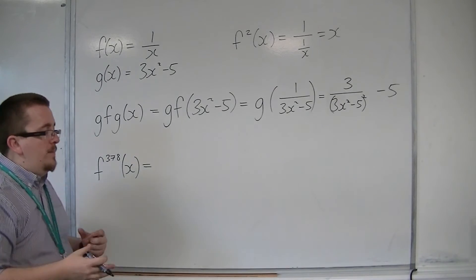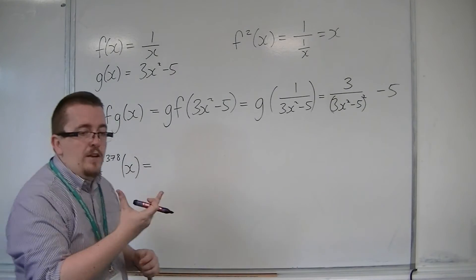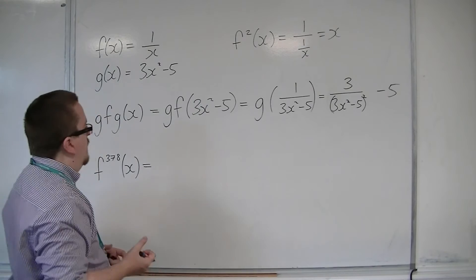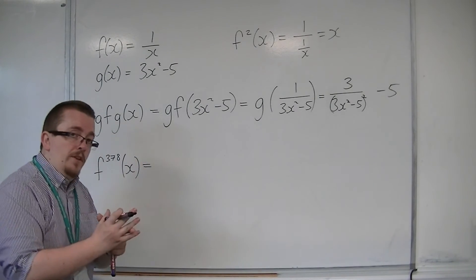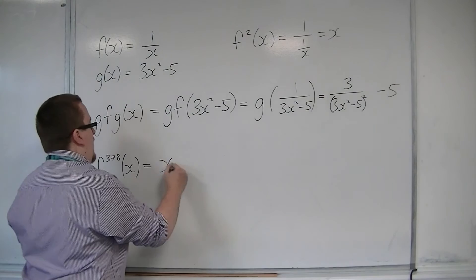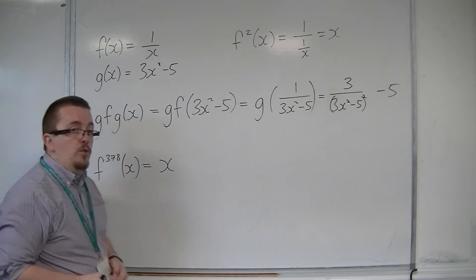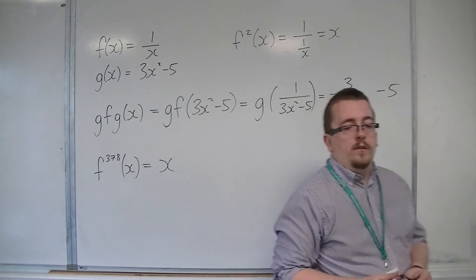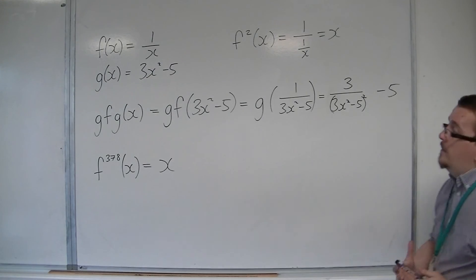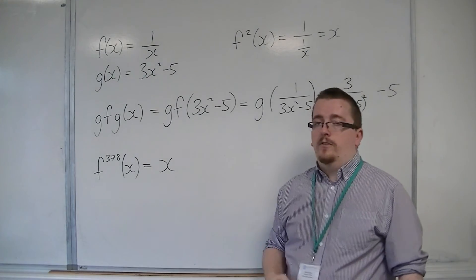So each time it's being applied, it is inverting itself. So because 378 is even, f to the 378 of x would just be x. If I'd chosen an odd number, I would have had 1 over x.